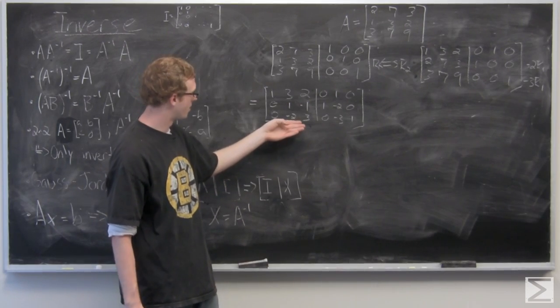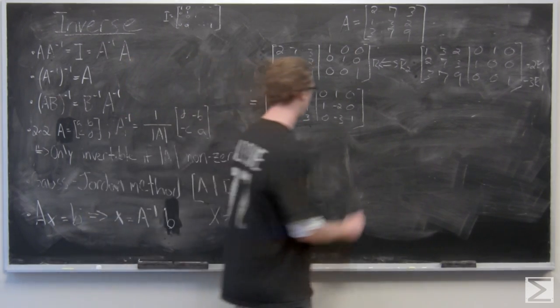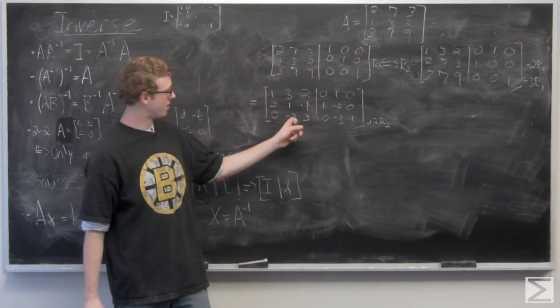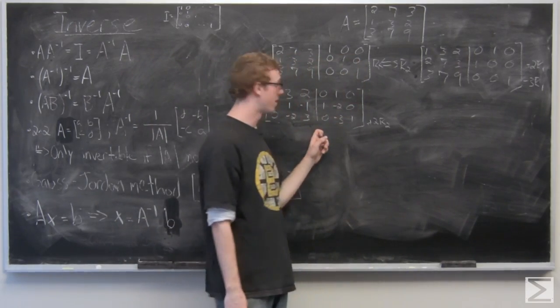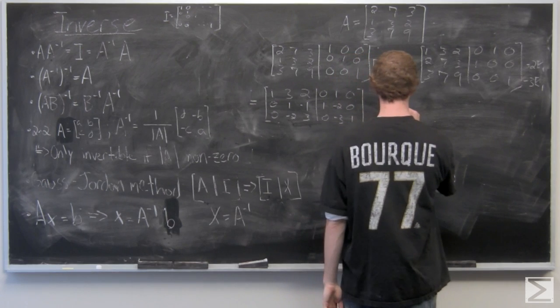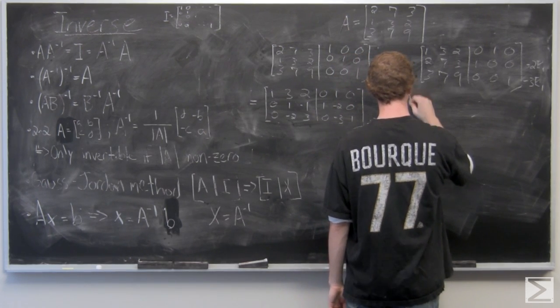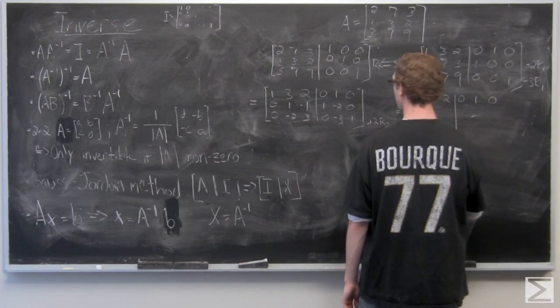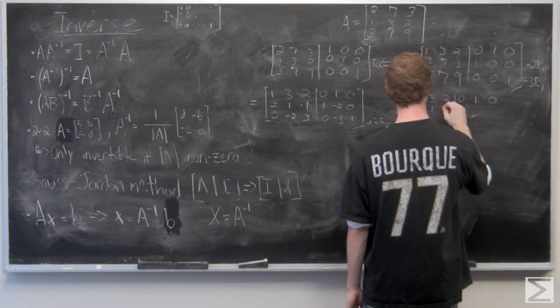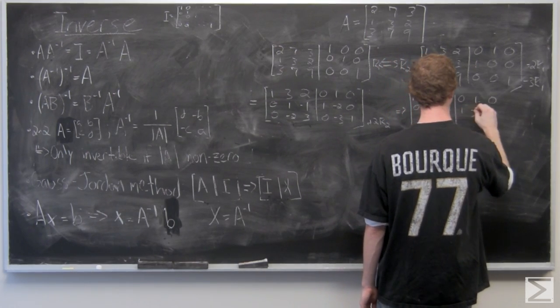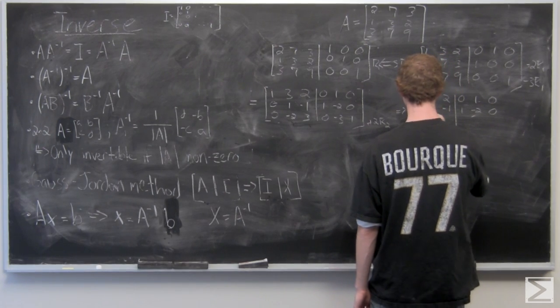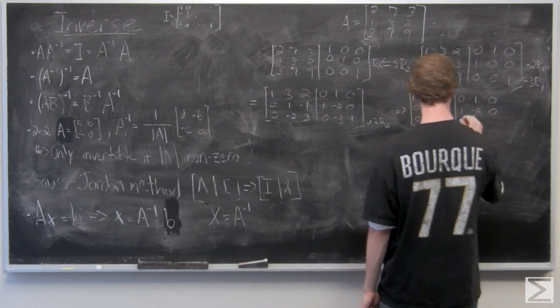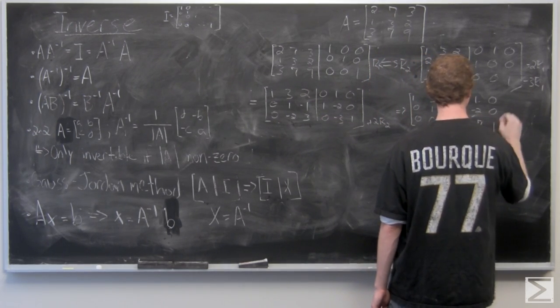So now what we need to do is add two of our two to our three. And that's in order to get rid of this zero here and hopefully make this three entry here a one.